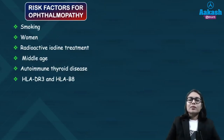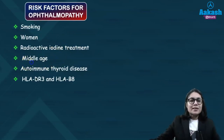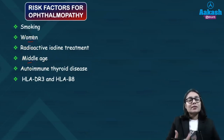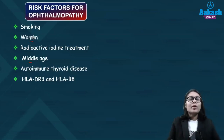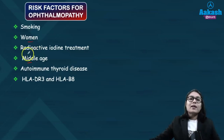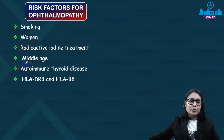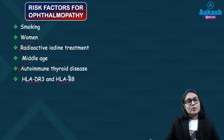The risk factors of thyroid ophthalmopathy include: it is generally seen in middle-aged females; smoking certainly aggravates the condition and can cause earlier development of thyroid ophthalmopathy; patients who have an autoimmune nature of thyroid disease or who have had earlier treatment with radioactive iodine for hyperthyroidism run a higher risk of developing thyroid eye disease. Additionally, positivity for HLA-DR3 and HLA-B8 is linked with increased rate of eye involvement in thyroid patients.